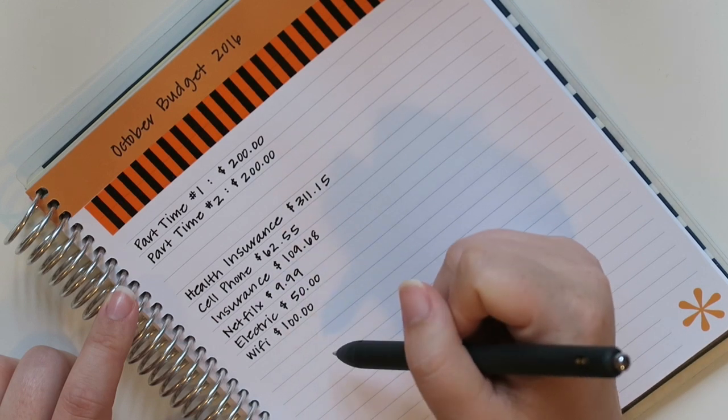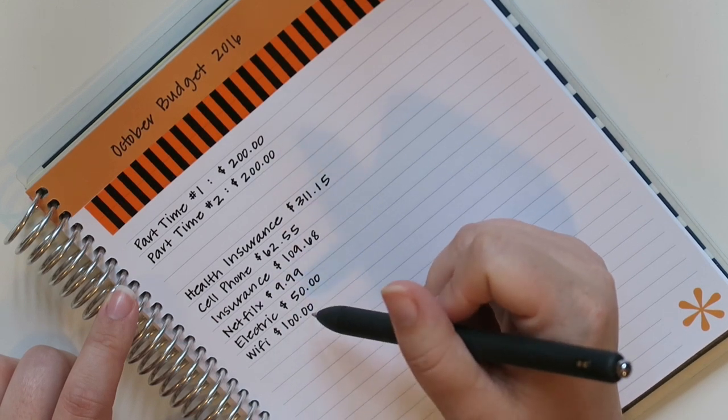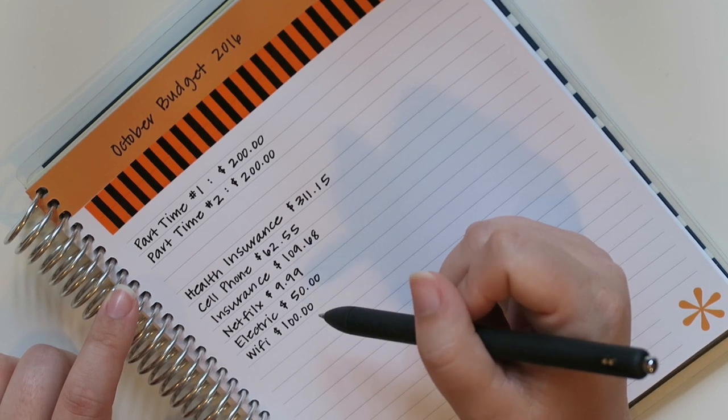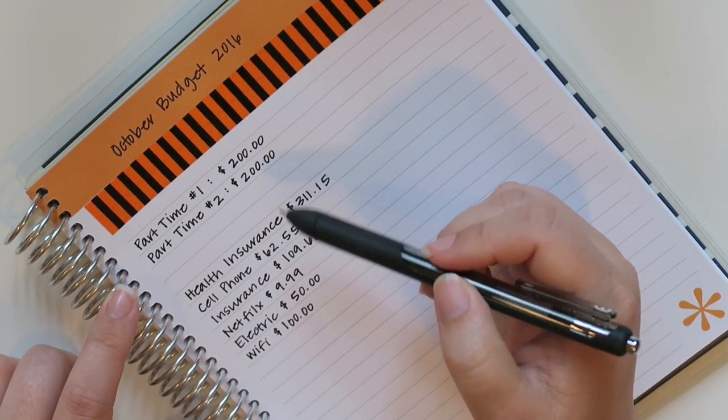What I do with my credit card is I actually pay it off every single month, like in full. And I usually just use it for like fuel for my vehicle, sometimes groceries, but just to put something on it this month that we're currently in.